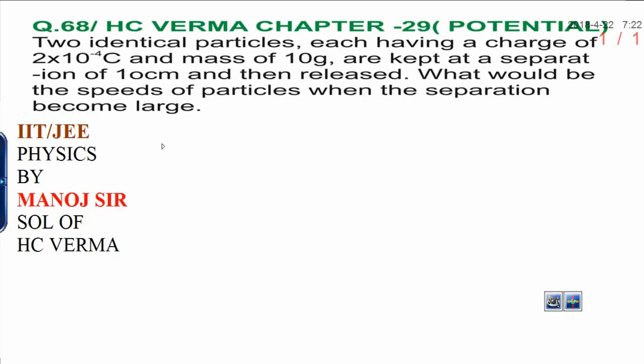Now, solution of this question. First, you read the question. Two identical particles, each having charge of 2×10⁻⁴ coulomb and mass of 10 gram are kept at a separation of 10 centimeter.